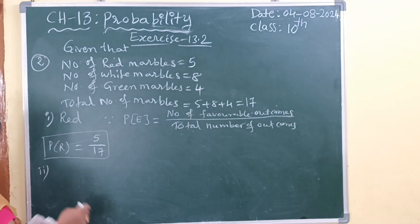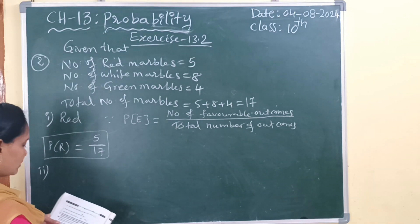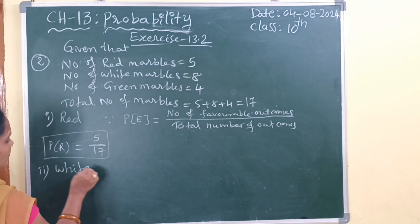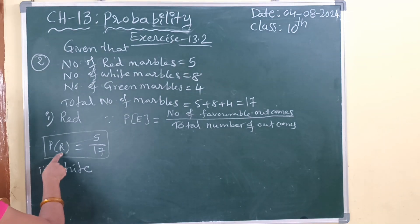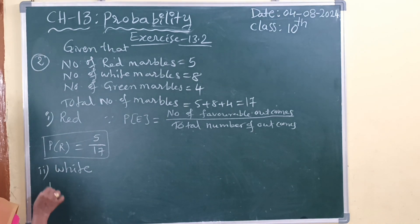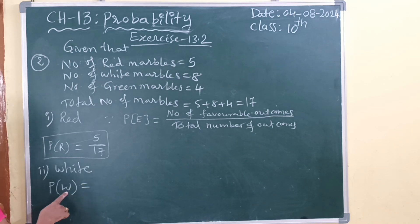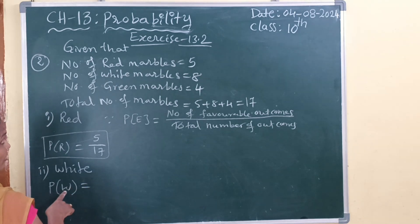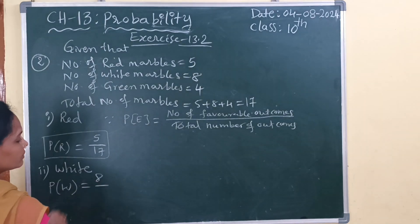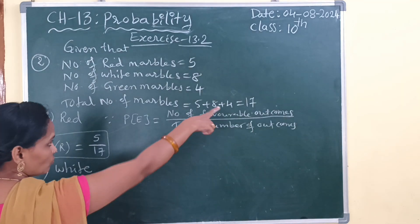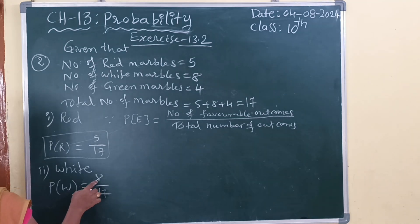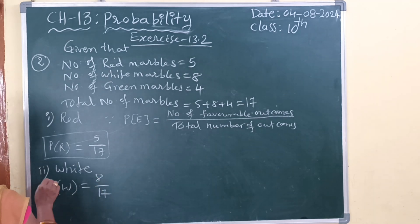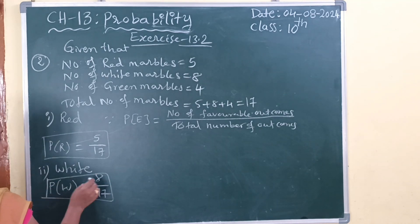Next, the second bit: white marbles. Probability of getting a white marble. White marbles — how many? 8. Divided by total number of outcomes: 17. So, probability of getting a white marble is 8 by 17.